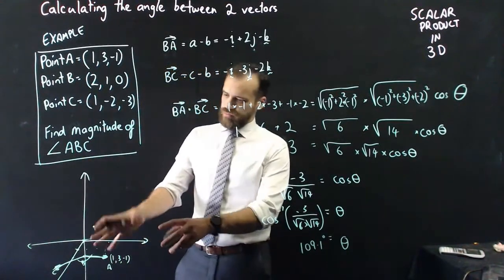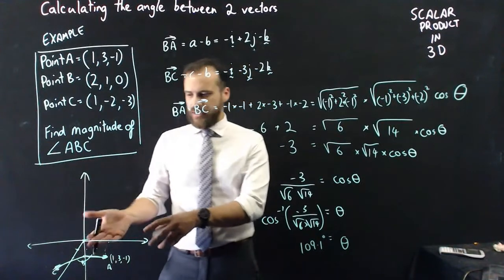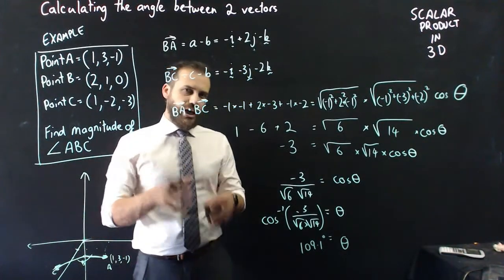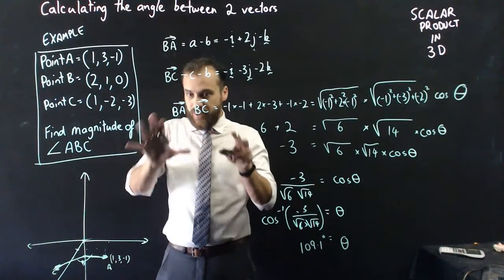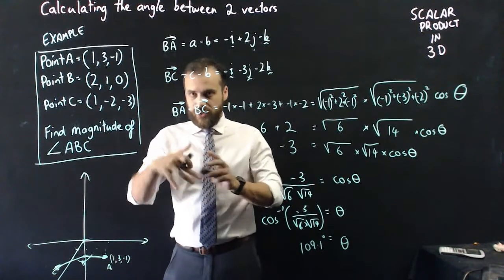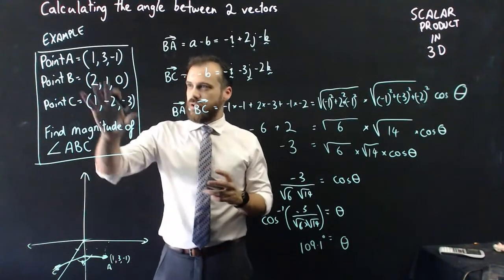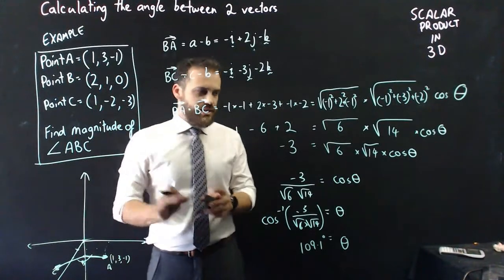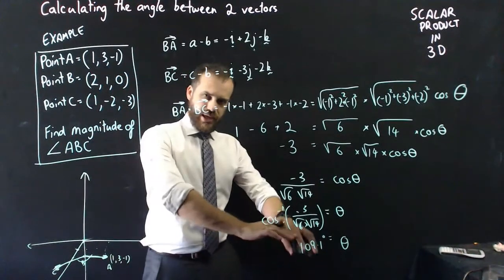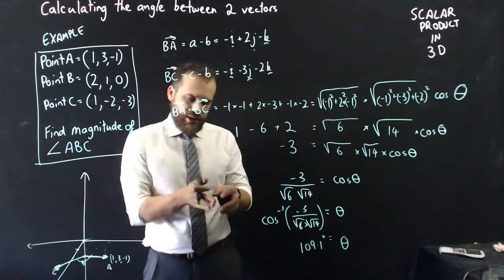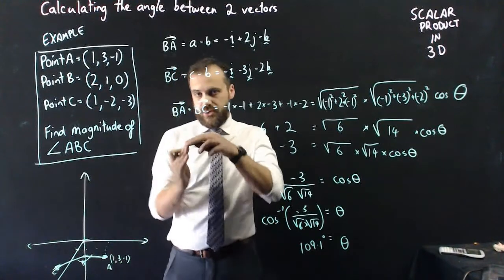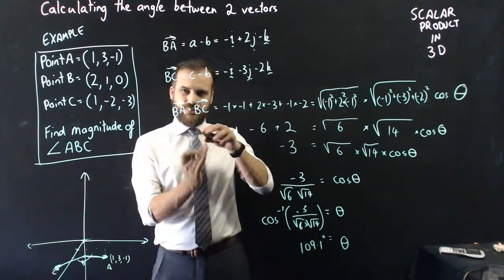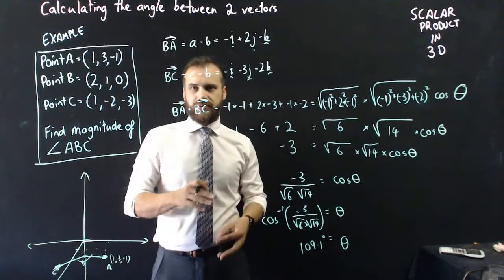My drawing looks like it might be more than that, but I'd challenge you to pause the video, get some pencils and rulers, try to actually build that model in space at your desk, and see if the angle between the two vectors you create looks like 109.1 degrees.